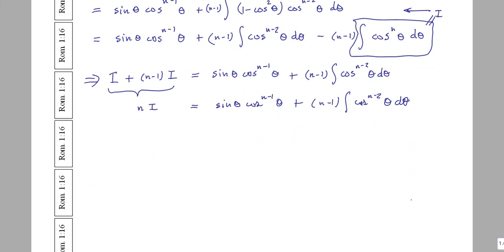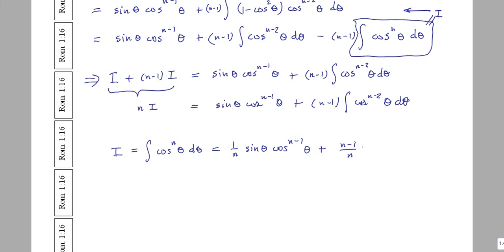All that remains is to divide both sides by n. So the integral of cosⁿθ dθ — our reduction formula — equals (1/n) sinθ · cosⁿ⁻¹θ plus ((n−1)/n) times the integral of cosⁿ⁻²θ dθ.